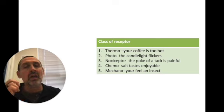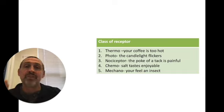These receptors can be divided into certain classes. For example, a thermoreceptor. Thermo has to do with temperature. It tells you that your coffee's too hot. Photo has to do with light. That's going to be your eyes receiving information.